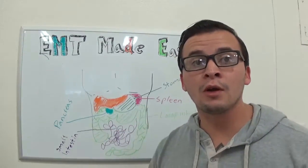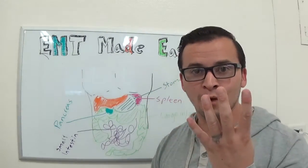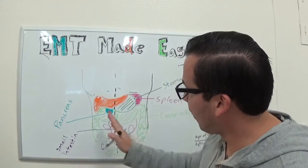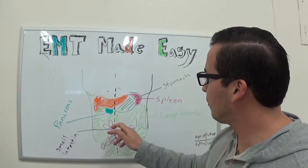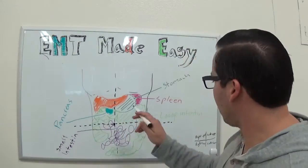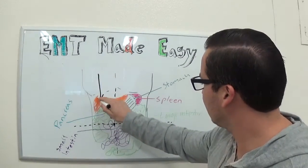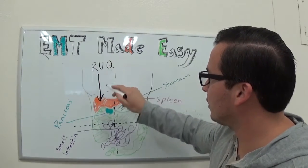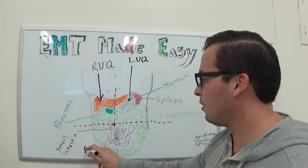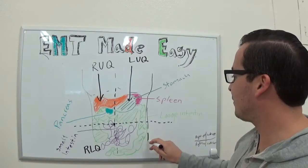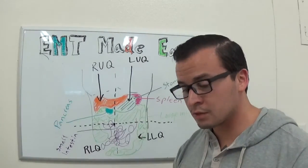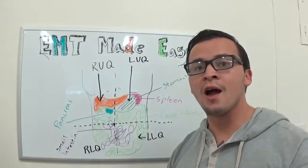Now your abdomen is broken up into four quadrants. I'm gonna divide them up right now. So this right here is what divides both sides, and then your belly button will be like right here somewhere, and then this line right here separates top to bottom. This right here on the chest is the right upper quadrant. This quadrant is the left upper quadrant. And then these are called the right lower quadrant and left lower quadrant right here.